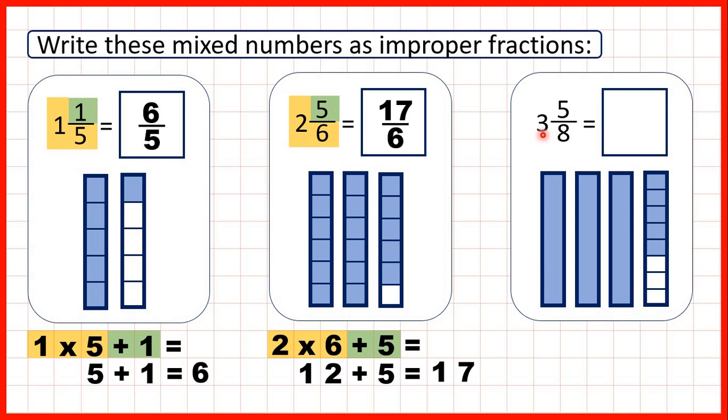Finally, we have 3 and 5 eighths. Again, the denominator stays the same, and this time we need to multiply 3 by 8, so multiply our whole number by our denominator, and then we can add the numerator. So 3 times 8 is 24, and if we add the 5 from our numerator, that gives us 29 as the numerator of our improper fraction.